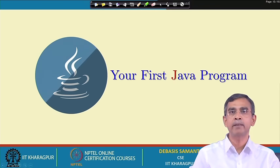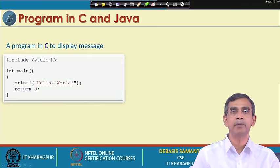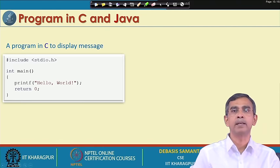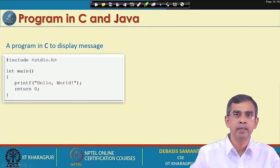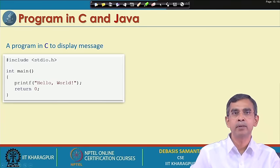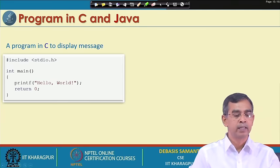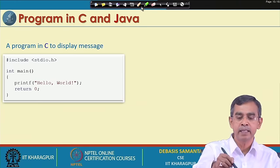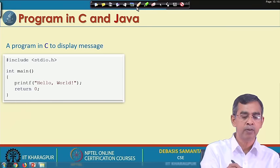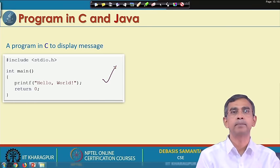Before going to write the first Java program, let me tell about how we usually write a program, for example in C. If you know C programming then it is good and you will be able to follow it. Here is basically the idea of how a C program will look like.